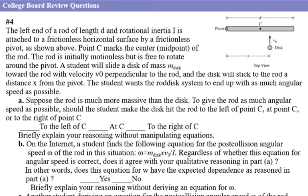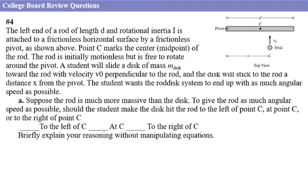The disc strikes the rod at a distance X from the pivot. The student wants the rod-disc system to end up with as much angular speed as possible. Suppose the rod is much more massive than the disc. Should the student make the disc hit the rod to the left of point C, at point C, or to the right of point C? Briefly explain your reasoning.